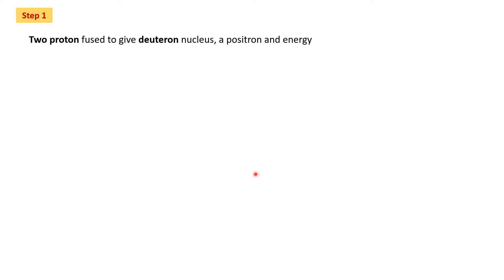Now we will put the same reaction into equation form. Two protons fuse to give a deuterium nucleus, a positron, and energy. Energy is released at each and every step due to the mass defect — meaning the mass of entities after the nuclear fusion reaction and the mass before the reaction do not match. That difference is converted into energy by the equation E = mc².